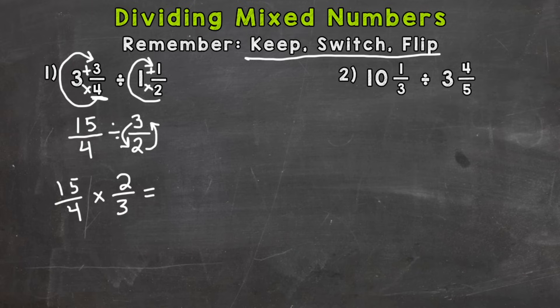Now we can multiply straight across to give us our answer. 15 times two, 30, and four times three is 12.